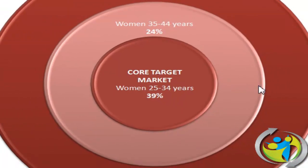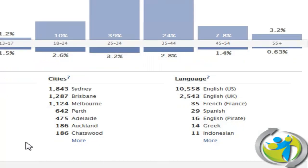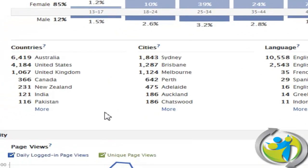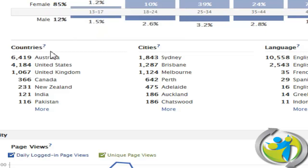This is our next ideal market after our core ideal market, and then this is the greater market for our page. Now let's take a look at the breakdown of the data for people. We don't see this in the ratio of men to women, but what we do see is the aggregate of the Facebook location — the country, the city, and the language spoken.